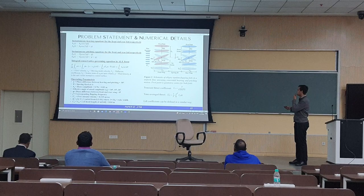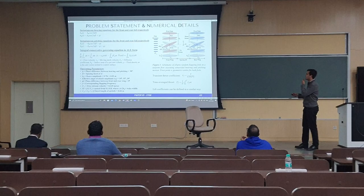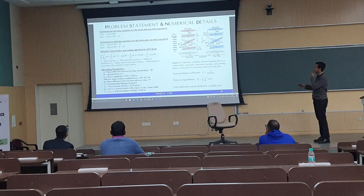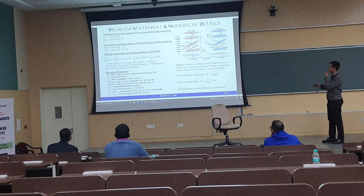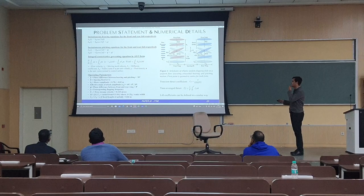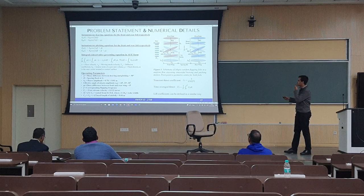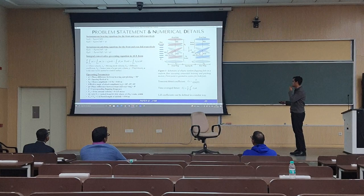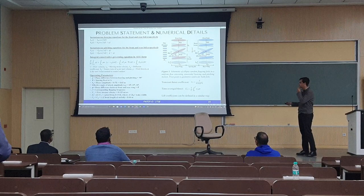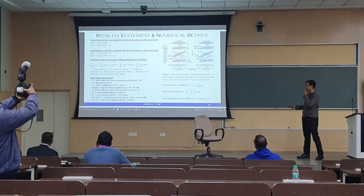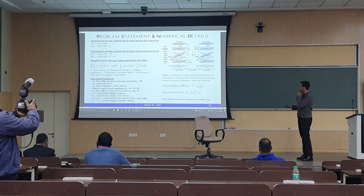The problem statement shows two wings in tandem configuration at a distance r, which is constant in our study. The heaving and pitching motions are characterized by a sinusoidal form with a phase angle capital phi between the front and rear airfoils, and small phi for the other two parameters. The integral conservative governing equation is used in ALE — the arbitrary Lagrangian Eulerian form — to numerically model the problem. Operating parameters were selected based on previous studies; for example, 90 degrees gives optimum flapping efficiency, and the heaving amplitude of 0.03 meters is due to restrictions of the experimental setup available in our laboratory.